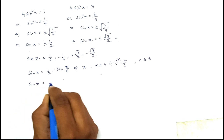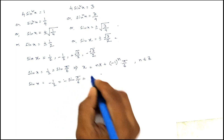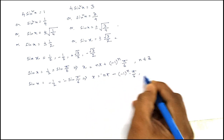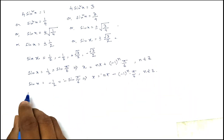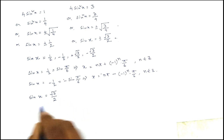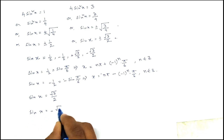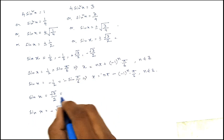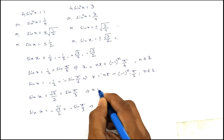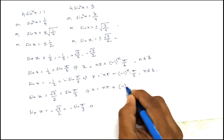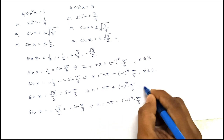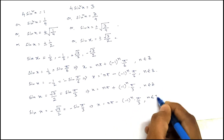From sin x equals minus 1/2, written as minus sin(π/6), we get x equals nπ minus (−1) to the power n times π/6, where n is an integer. From the second expression, sin²x equals 3/4, so sin x equals plus or minus √3/2, which equals plus or minus sin(π/3). The general solutions are x equals nπ plus or minus (−1) to the power n times π/3, and x equals nπ minus (−1) to the power n times π/3, where n is an integer.